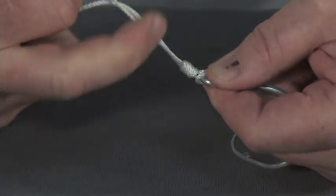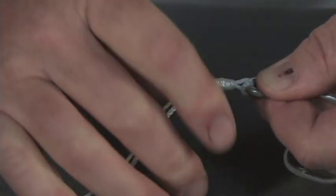And then you can tighten the knot by pulling on both ends, and then tighten it back up on the hook again.